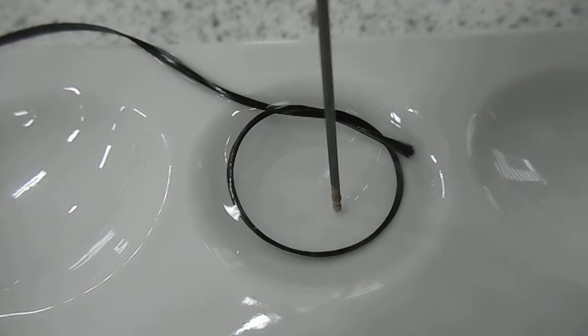The electrolysis of lead 2 nitrate solution on the micro scale. Again we've got a carbon fiber anode running around the outside and a graphite pencil lead cathode in the center, all connected to a 12 volt DC power supply.